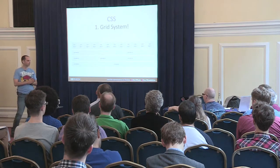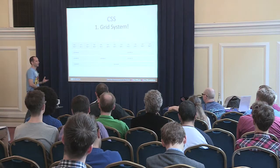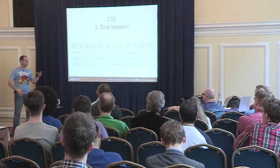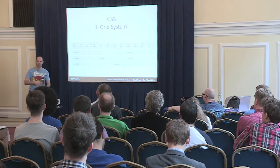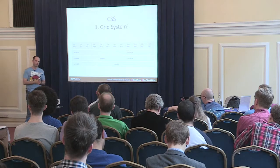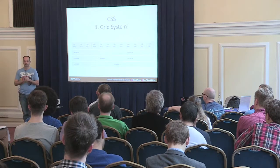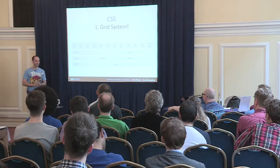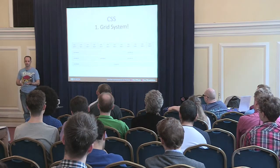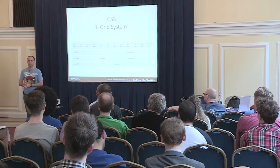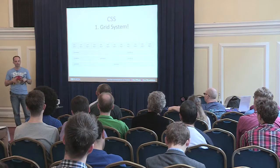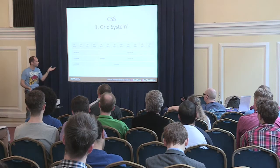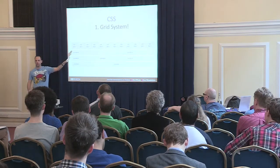Tables are bad because it takes more time for the browser to figure out the widths with all those nested tables, and the website ends up very sluggish. The cool guys today use divs, but divs also have their problems. Bootstrap gives you this idea of a grid — it looks kind of like a table. The grid system in Bootstrap contains rows, and every row contains 12 boxes.